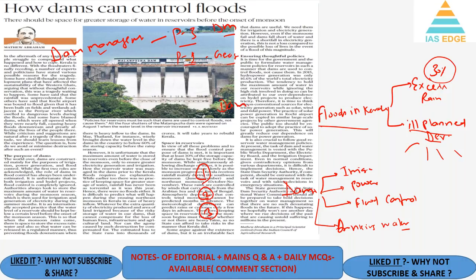The purposes of dam construction are irrigation in agriculture, generation of hydroelectric power, flood control, and drinking water. The roles of irrigation and power generation are well acknowledged, however the flood control function of dams is somehow ignored in the process. Water is a state subject and dams are managed by states.